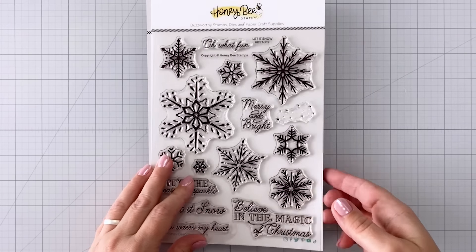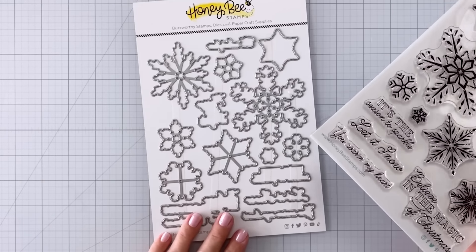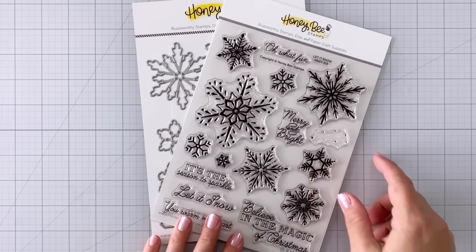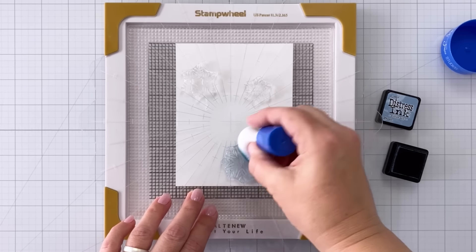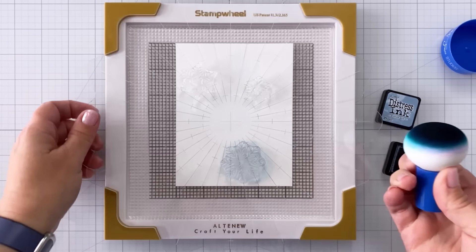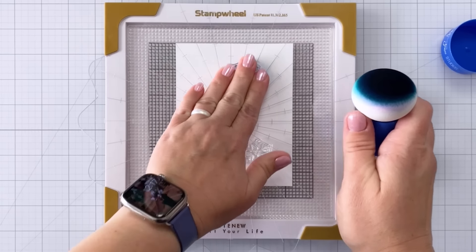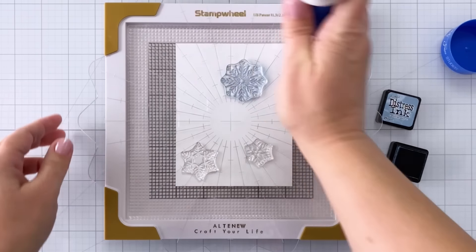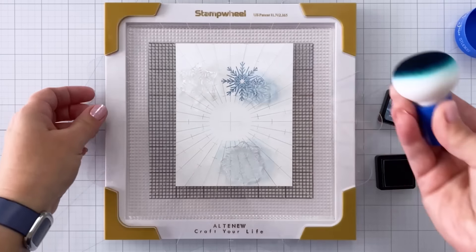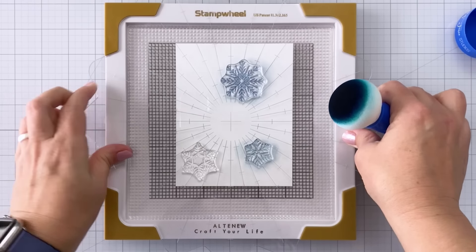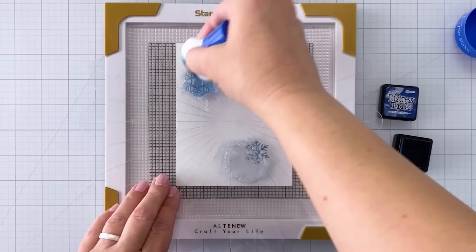Next I'm going to come in here with the Let It Snow stamps and dies. These are some really gorgeous intricate snowflakes and sentiments and I'm going to be using my distress inks to color three of the snowflake stamps. I'm using Stormy Sky and then I'll be using Faded Jeans and I will also be using Prize Ribbon. So I'm going to do three different shades of blue and I'm actually going to stamp my sentiment in black ink.